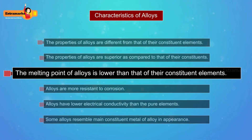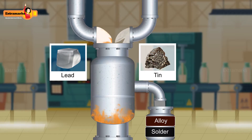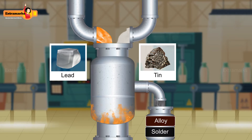The melting points of alloys are lower than that of their constituent elements. For example, solder, which is an alloy of lead and tin, has a much lower melting point than that of lead or tin individually.